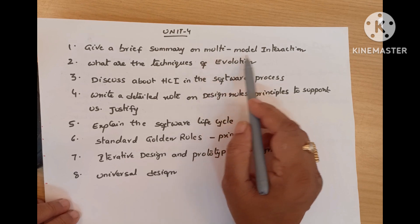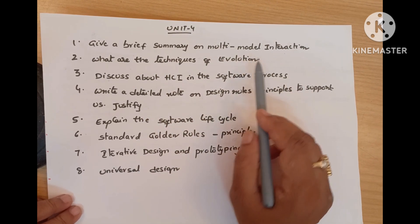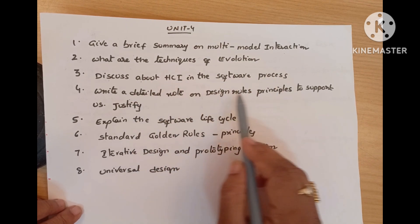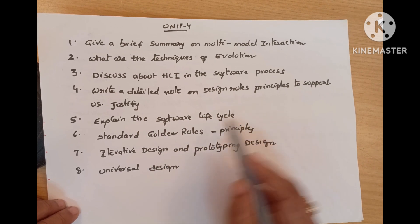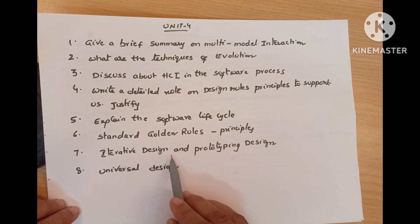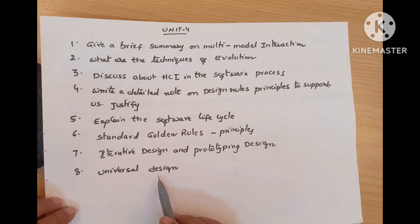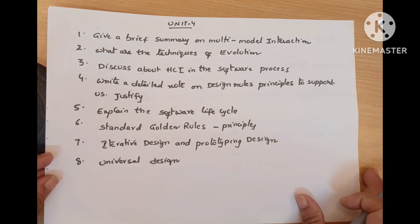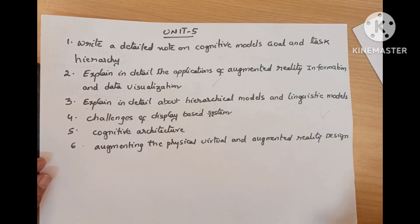Unit 4 important questions: write a brief summary on multi-modal interaction. What are the techniques of evaluation? Discuss about HCI in the software process. Write a detailed note on design rules, principles to support usability. Explain the software life cycle. Standard golden rules and principles. Explain the difference between iterative design and prototyping design. And explain about universal design. These are all the important questions in unit 4 — mostly all questions came in previous old question papers, so read carefully.